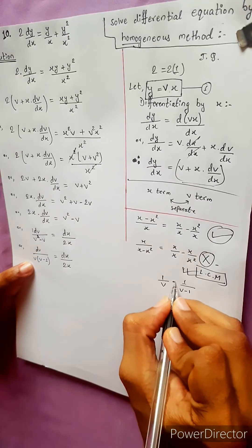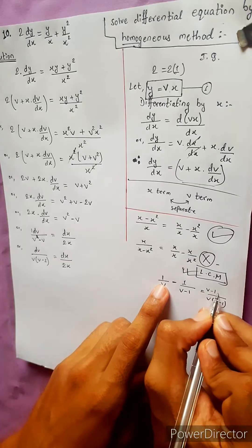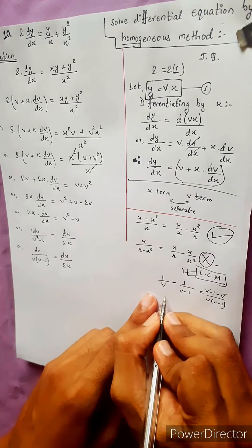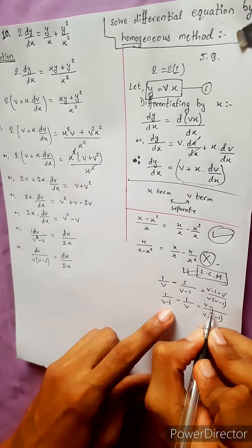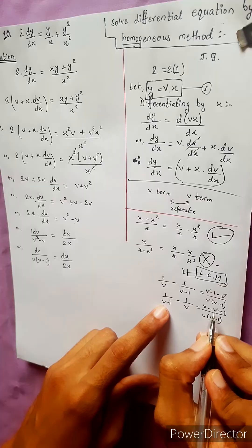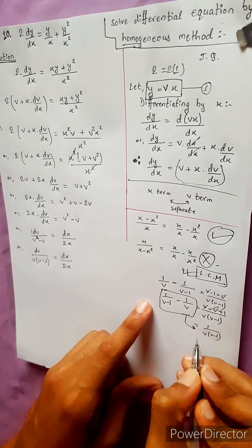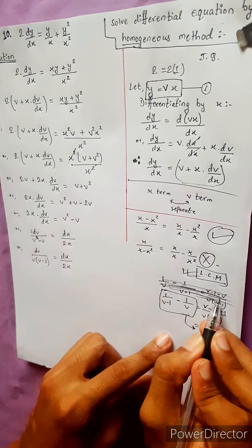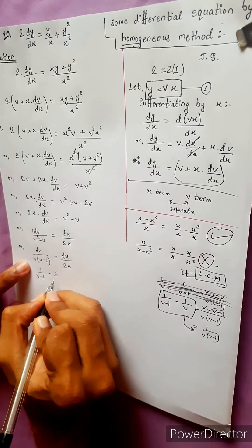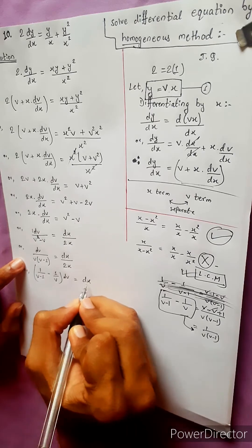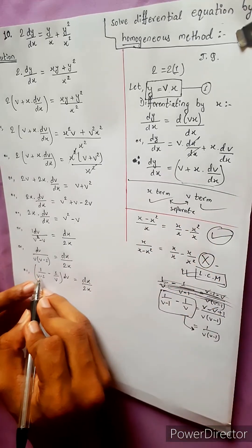Suppose 1 over v(v minus 1) equals A over v plus B over (v minus 1). Checking: b minus 1, b minus 1, minus b, so the partial fractions give us 1/(v minus 1) minus 1/v. Bracket db equals dx divided by 2x.